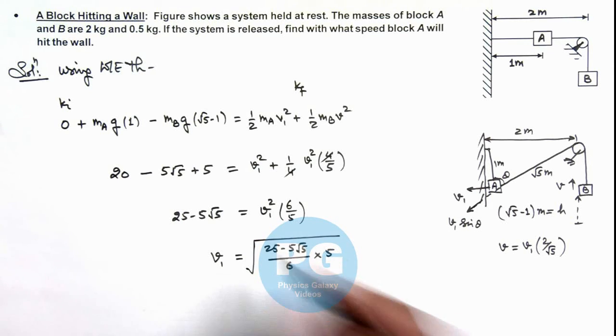I am leaving it as an exercise for you to solve the result. The numerical value of this speed finally obtained will be 3.4 meters per second. That is the final result of this problem.